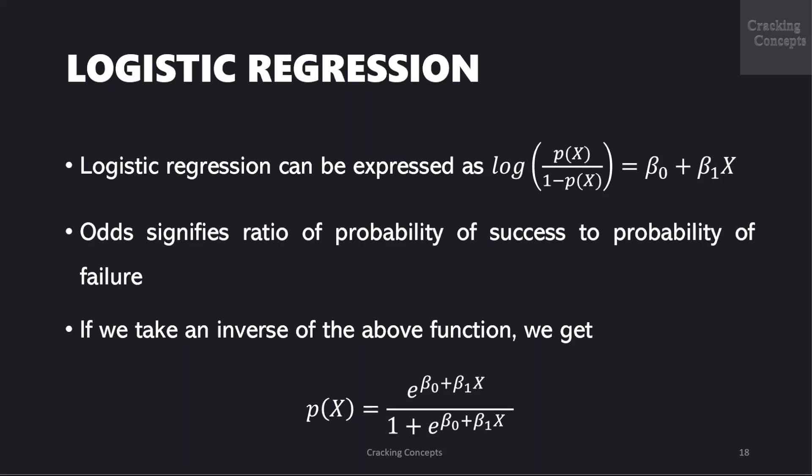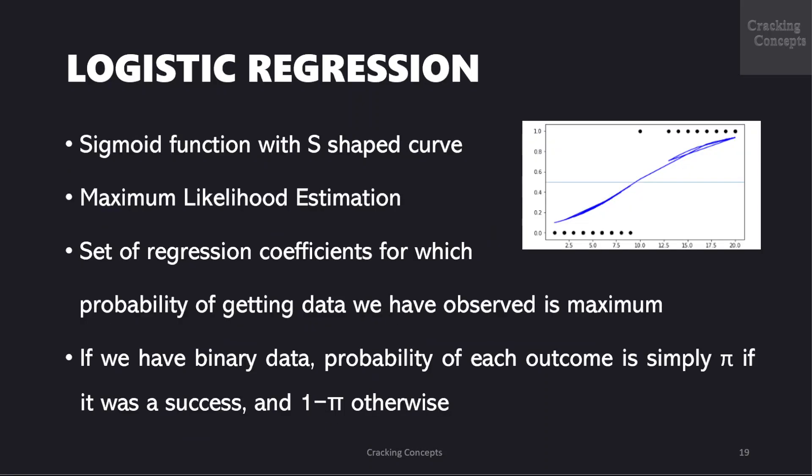Therefore in logistic regression, linear combination of inputs are mapped to the log which is odds, the output being equal to 1. Now if we take an inverse of the above function, we get p of x as e raised to beta 0 plus beta 1x by 1 plus e raised to beta 0 plus beta 1x. Now this is called the sigmoid function and it gives an s-shaped curve as shown in the figure. It always gives a value of probability ranging from 0 to 1.